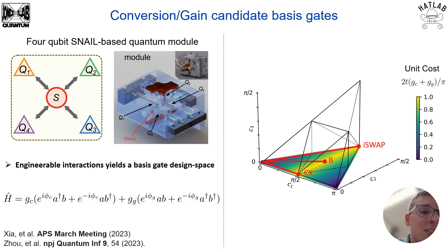For our system, the SNAIL coupler couples qubits and performs gates by driving the SNAIL at either the sum or the difference of those qubits. Together those two interactions can be written in this Hamiltonian, which forms our basis gate design space. I geometrically represent this in the Wigner chamber in this picture on the right, which tells us how different ratios between conversion and gain plot as different gates that we might choose to calibrate.